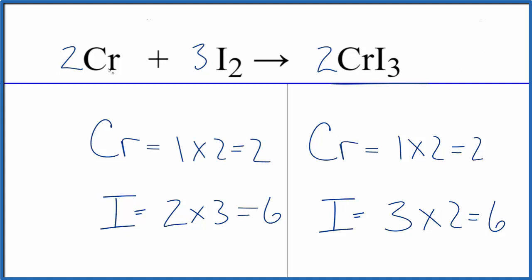If you want to know the states, chromium that's a metal, so it's a solid. Iodine, that's a gas usually. Probably going to be a gas in this equation. And then chromium 3 iodide, that would be a solid as well.